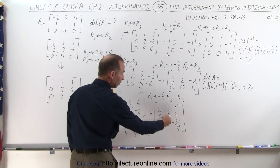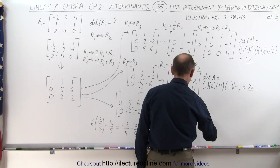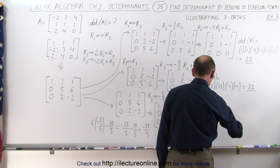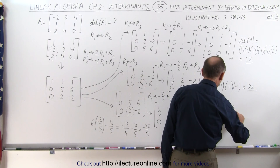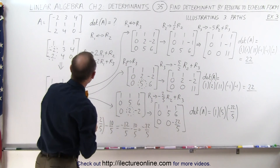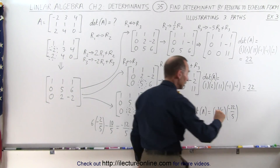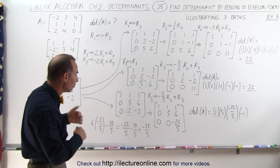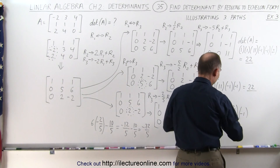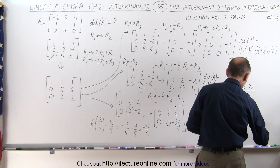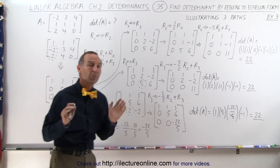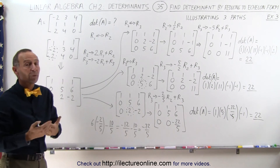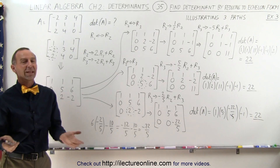Now in reduced echelon form, we can find the determinant. The determinant of A equals the product of the diagonals: 1 times 5 times negative 22 over 5. We keep track of what we've done — only one interchange, so we multiply by a single negative 1. No scaling was applied. The 5s cancel, and the negative 1 cancels the negative sign on 22, giving positive 22. No matter how you approach reducing the matrix to echelon form, as long as you track and compensate for each operation, you'll find the correct determinant every time. And that's how it's done.